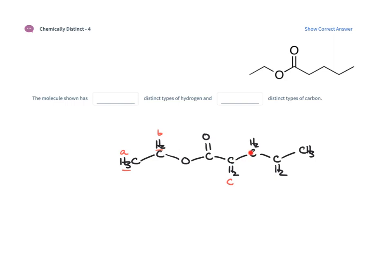Next we go on to another CH2 — that's going to be type D. You can distinguish that from the previous one by saying this CH2 is just one carbon away from the carbonyl, while this CH2 is two carbons away — they're in different environments. We come down to the next CH2, that is E. And then finally the CH3 is type F. It's different than the other CH3 because there's no symmetry — this CH3 is two atoms away from an oxygen, while the other is five atoms away. So they are distinct. That means this compound has six different types of hydrogens.